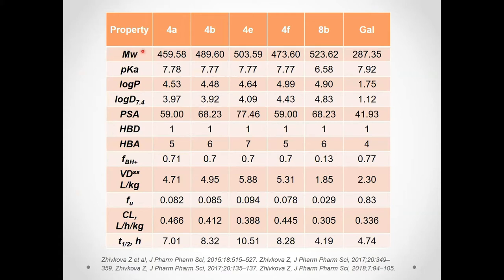Various physicochemical properties and pharmacokinetic parameters were calculated for the five active compounds. Molecular weights are around 500. The pKa values are close to that of galantamine. The hybrids are more lipophilic than galantamine according to their logD values. Although more lipophilic, they had polar surface areas wider than galantamine but lower when normalized per unit mass. There was only one hydrogen bond donor — the hydrogen atom from the ammonium cation — while the number of hydrogen bond acceptors depended on the oxygen atoms in the molecules, up to 10 for all active compounds.